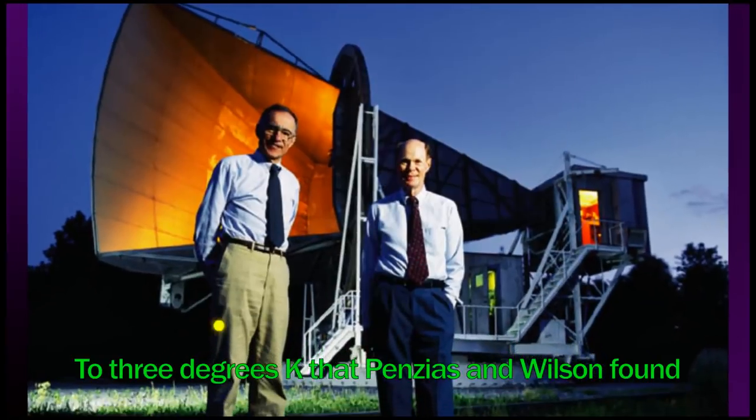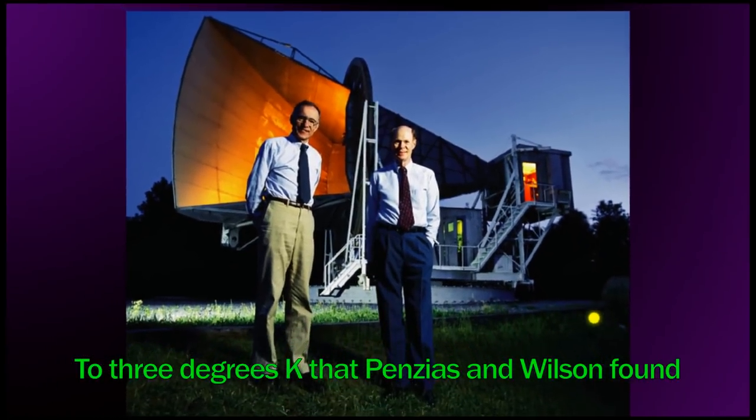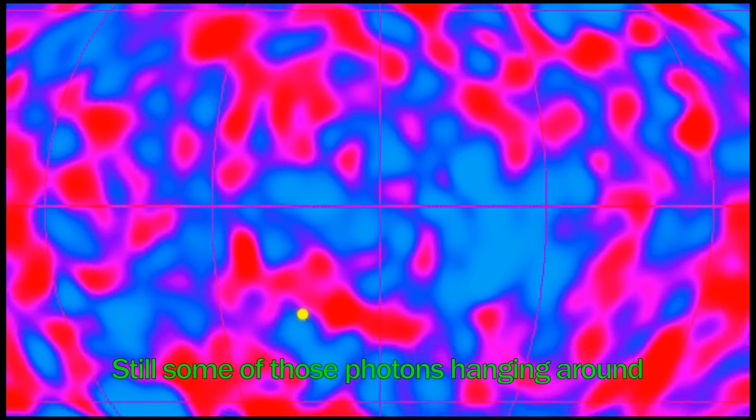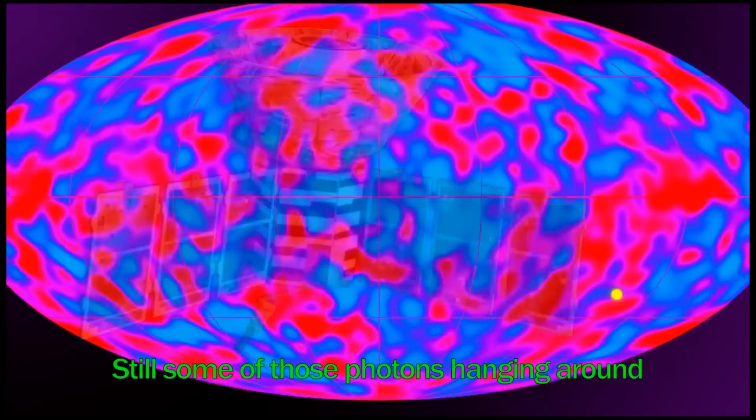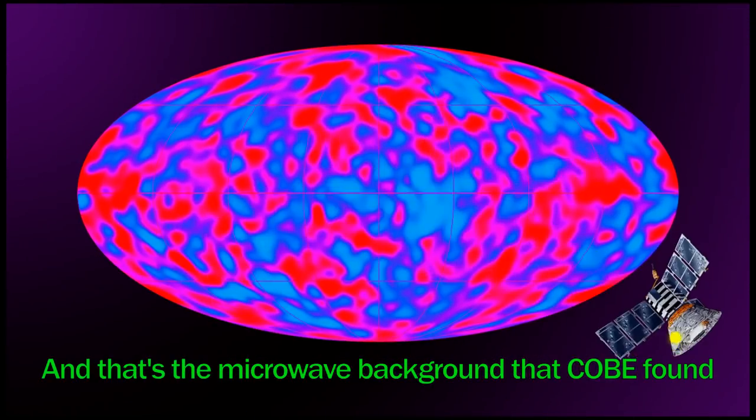Particles and energy in furious motion. Then everything expanded and the place cooled down to 3 degrees K that Penzias and Wilson found. Still some of those photons hanging around. And that's the microwave background that COBE found.